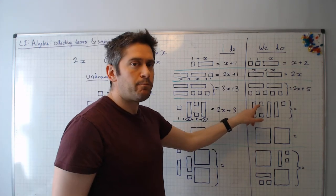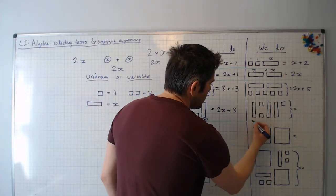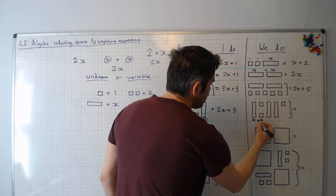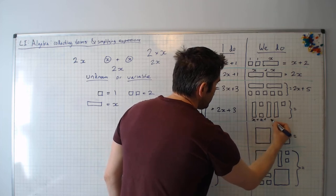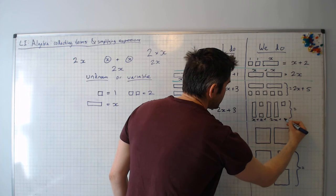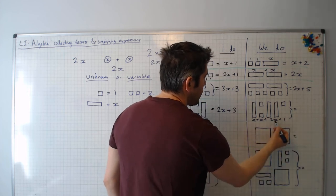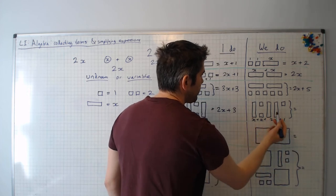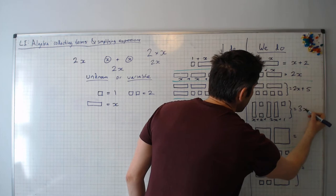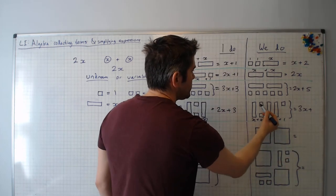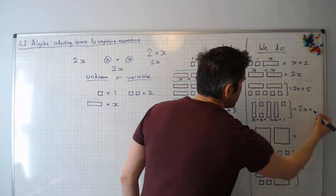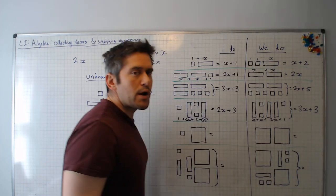Have a go at this one. 1x plus 2x plus 1. 1x plus 2x, 1, 2, 3x. Plus 1, 2, 3. 2 plus 1 makes 3. 3x plus 3.